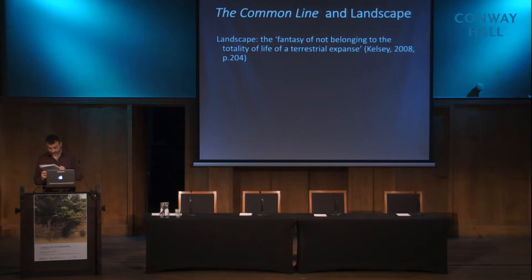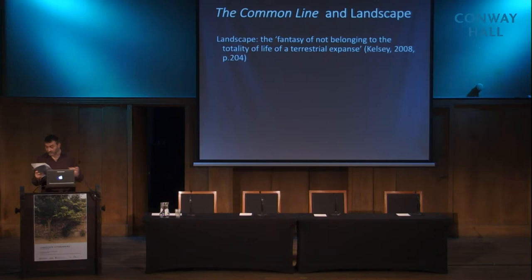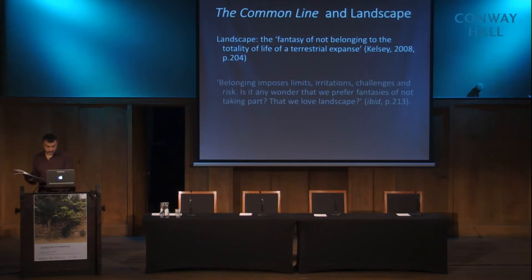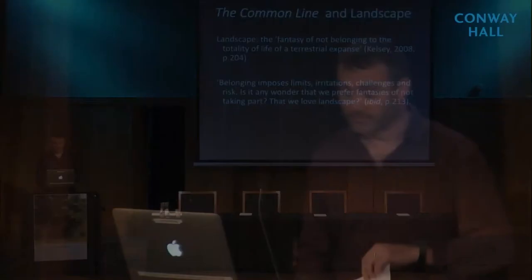The distances of landscape allow us to pretend that we're not earthlings, that we're not irrevocably bound to the fate of the worlds that we inhabit. Kelsey's incisive diagnosis highlights how landscape imagery in particular sustains this fantasy of not belonging to the earth. He notes that romantic landscape art and literature, which on the face of it often seems to implore us to belong, to return, to reconnect, is in fact very much part of the discourse it apparently denies, insofar as it enshrines not belonging in the gesture of longing to belong. He concludes with a pithy summary of why not belonging to landscape has its attractions: belonging imposes limits, irritations, challenges and risks. Is it any wonder that we prefer fantasies of not taking part, that we love landscape?